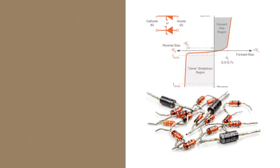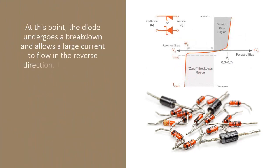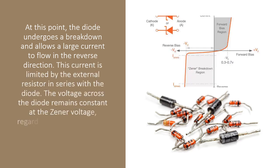At this point, the diode undergoes a breakdown and allows a large current to flow in the reverse direction. This current is limited by the external resistor in series with the diode. The voltage across the diode remains constant at the Zener voltage, regardless of the changes in the applied voltage or the load resistance.